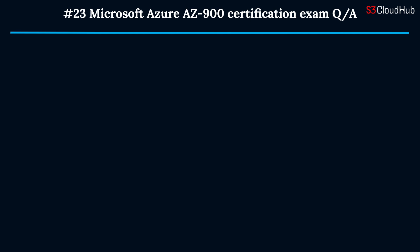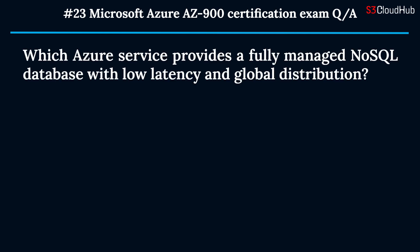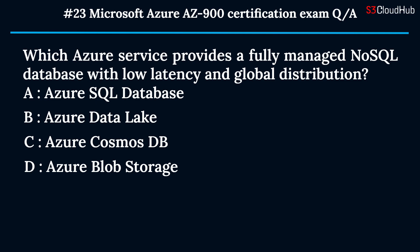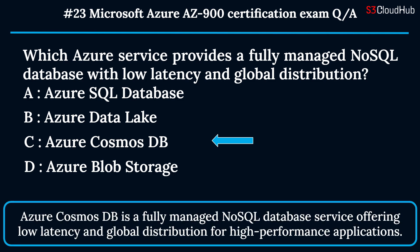The twenty-third question: which Azure service provides a fully managed NoSQL database with low latency and global distribution? Option A: Azure SQL Database. Option B: Azure Data Lake. Option C: Azure Cosmos DB. Option D: Azure Blob Storage. The correct answer is option C. Azure Cosmos DB is a fully managed NoSQL database service offering low latency and global distribution for high-performance applications.